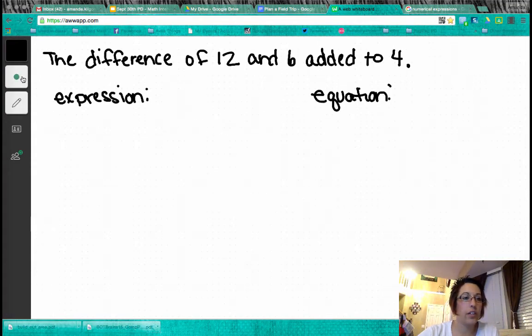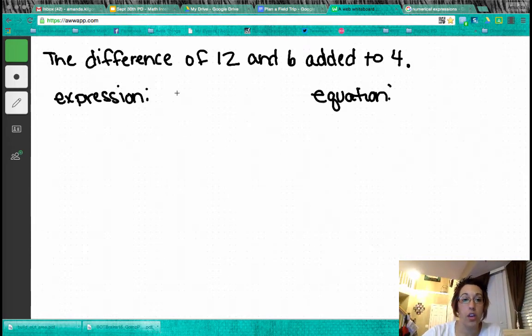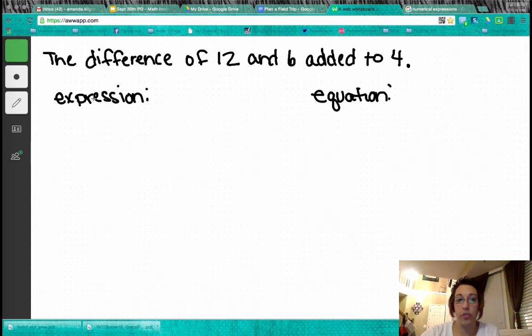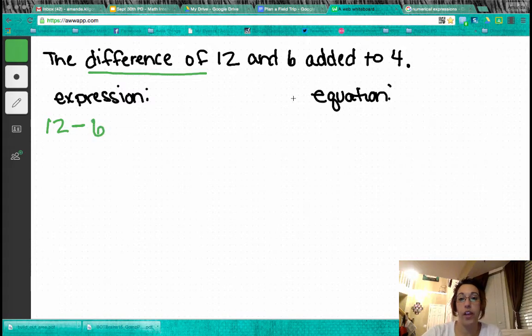Okay, so here is another example that we're going to work on. And we want to think about the difference of 12 and 6 added to 4. So we have to start with our expression here. The difference of means subtraction, 12 and 6 means 12 comes first, subtract 6, added to 4. Add 4. In this case, we want to put the parentheses around the 12 and the 6 because that step has to be done first.